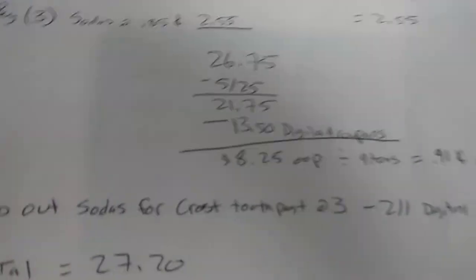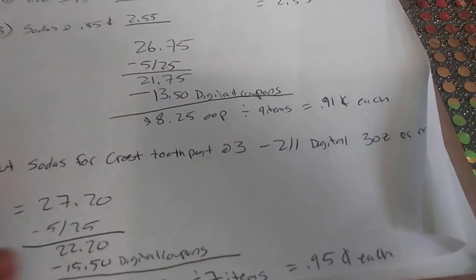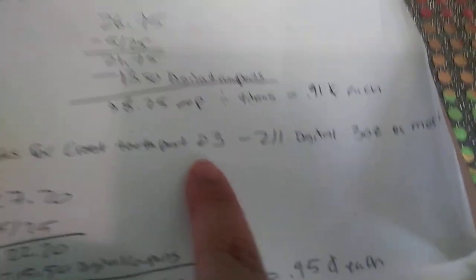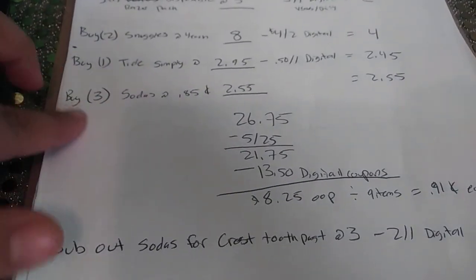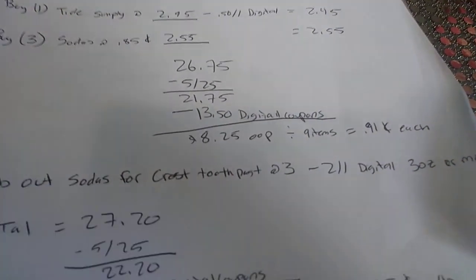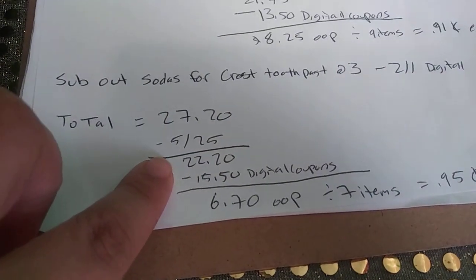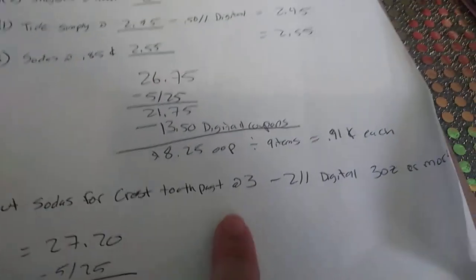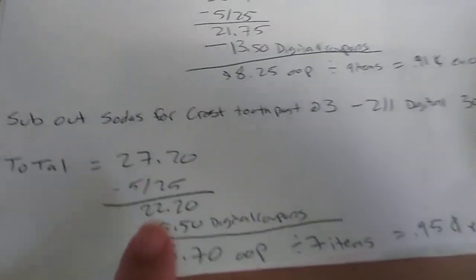Now if you want your out of pocket to be a little bit less, what you could do is sub out the sodas for a Crest Toothpaste at $3. Because there's a digital coupon for $2 off any Crest Toothpaste, three ounces or more. So they do have some Crest Toothpaste that are priced at $3 at the store. So you could definitely use that instead. So what you would do is just take off this one here and put in the Crest Toothpaste at $3. So your new total would be $27.20 minus that $5 off $25, so it'd be $22.20. So instead of having no coupons for that last item, it would be this there instead. So $3 here minus $2, so it would be $1.